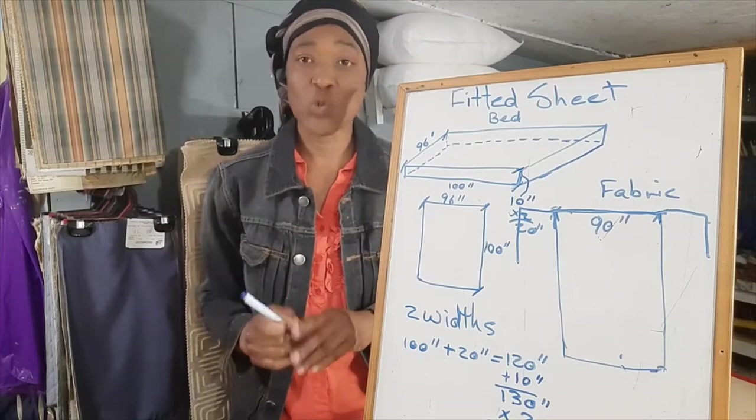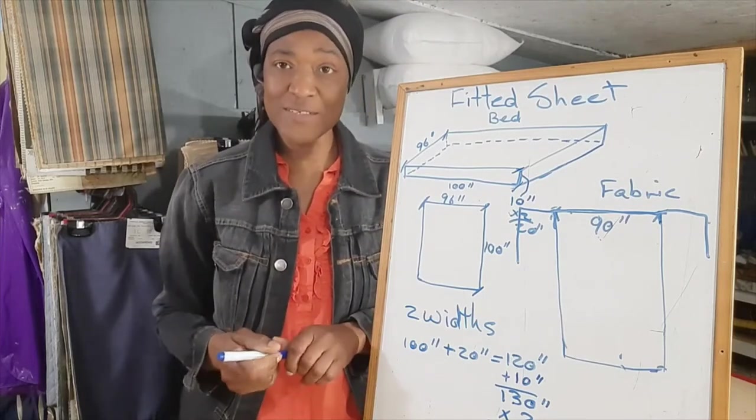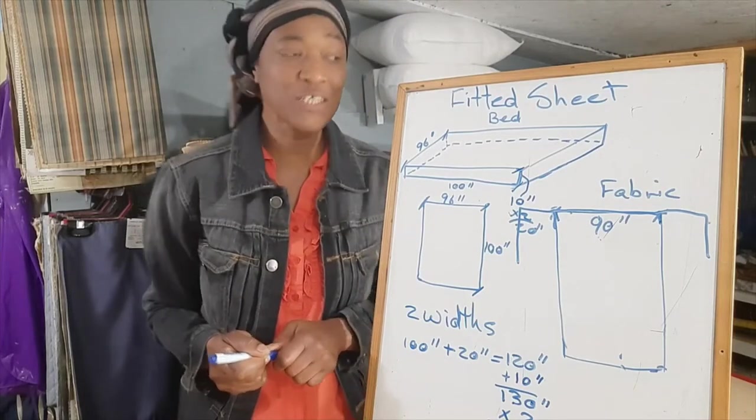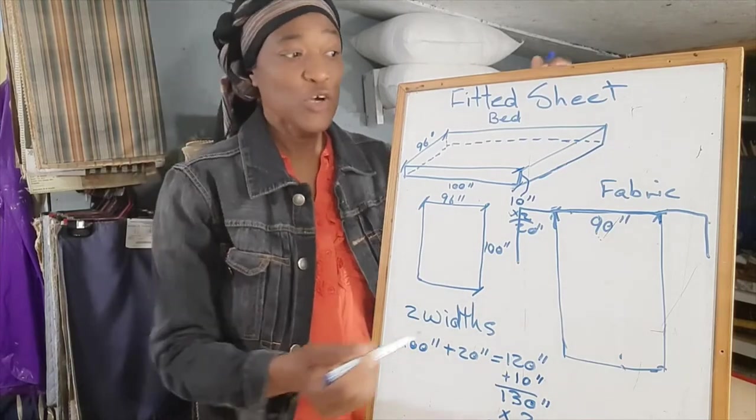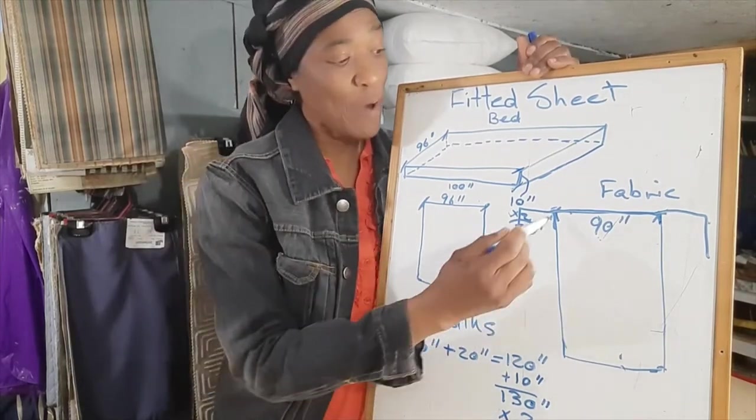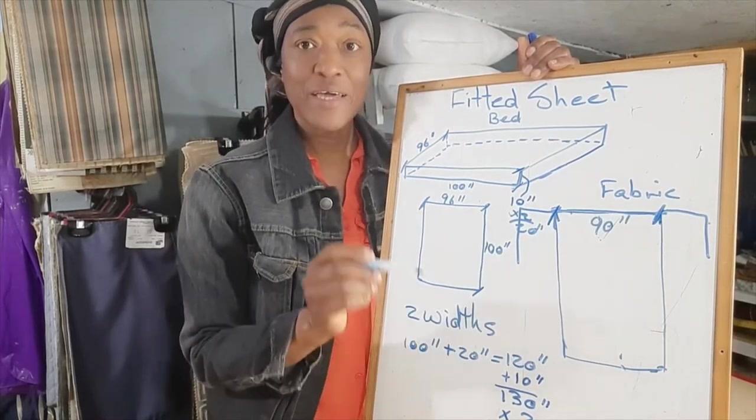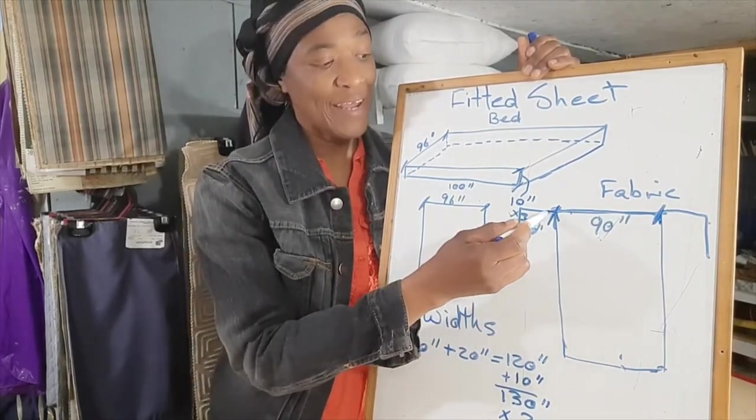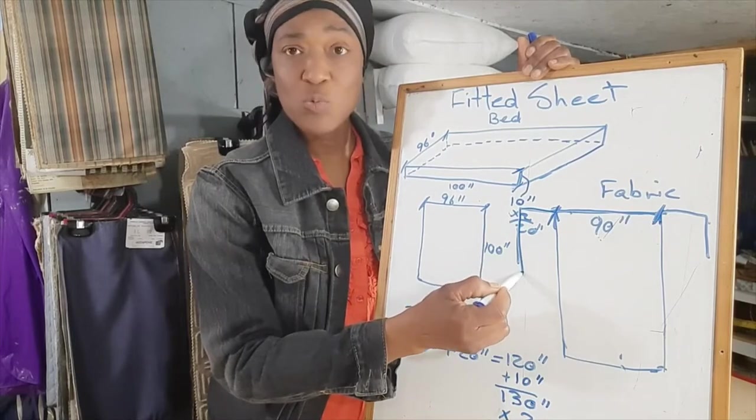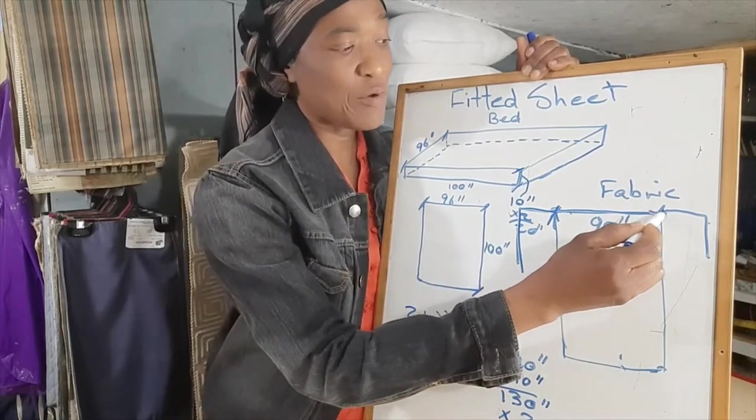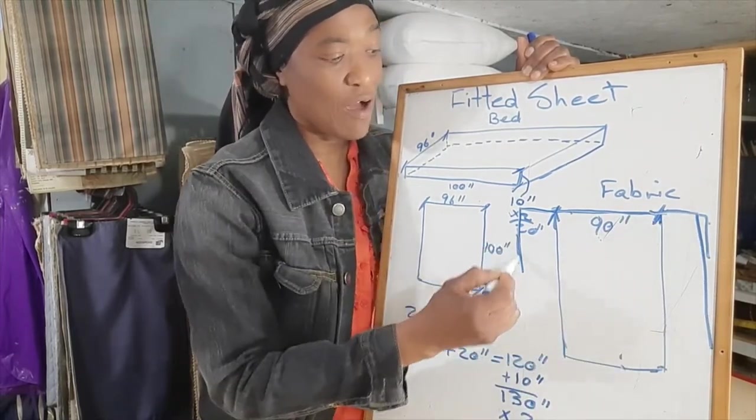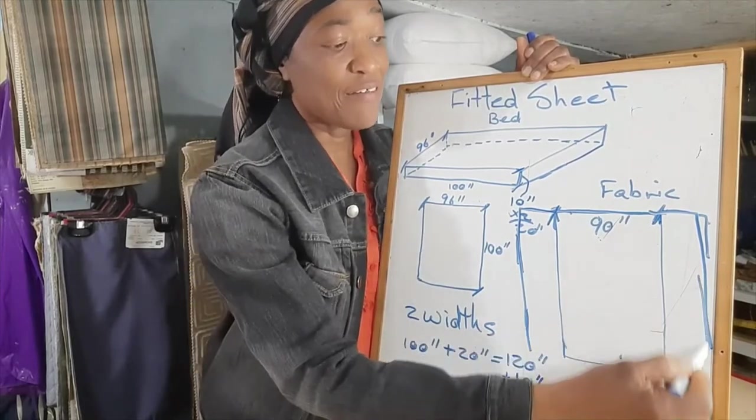The best way to join your fabric panels so they look intentional is to take your one width of fabric, place it in the middle, then put one panel to one side and another panel to the other side.